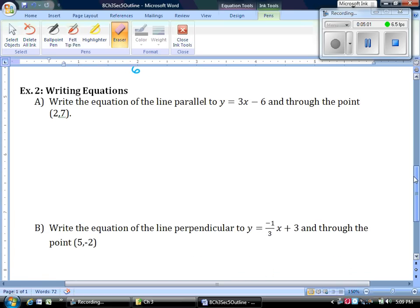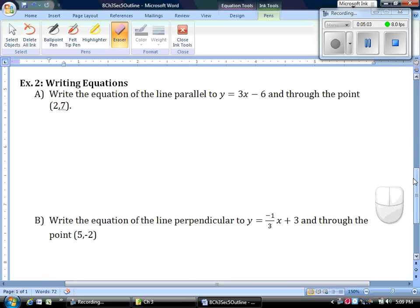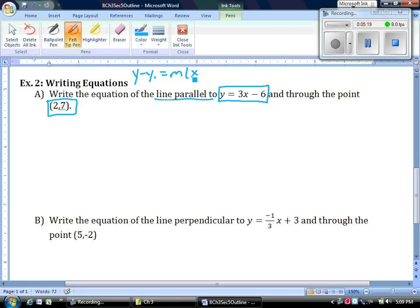So what we're going to use that for is writing equations. I want the equation of the line parallel to this equation and through the point (2,7). Remember to use point slope form, which is how we write lines. What we need is a point and a slope. We have the point right here. We need to find our slope.